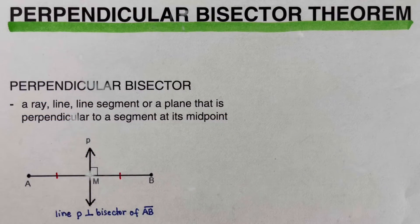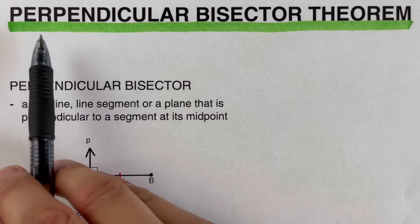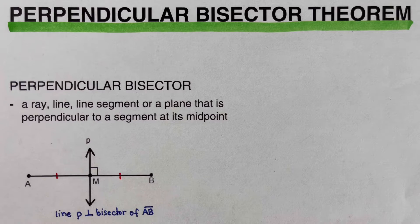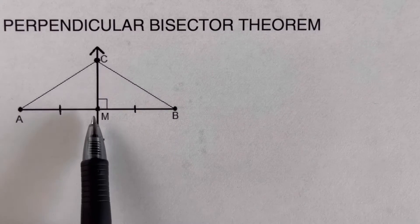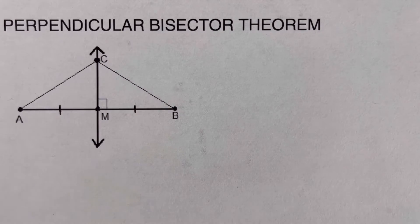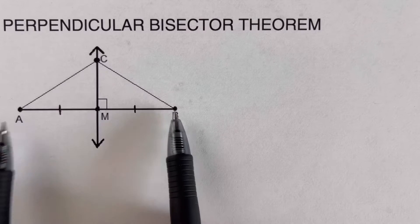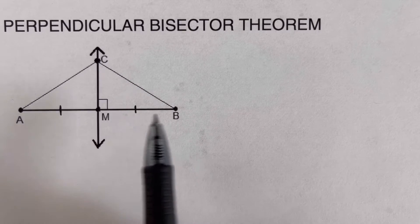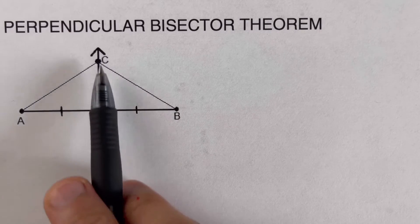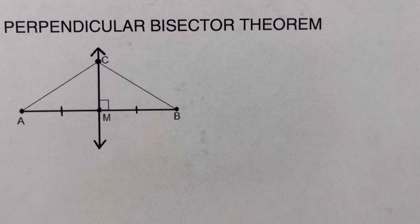Hello everyone. In this video we're going to focus on solving problems involving the perpendicular bisector theorem. Before we go over some examples, let's have a review. Looking at this picture, line CM is a perpendicular bisector of segment AB. Two conditions are met: it is perpendicular, forming a 90-degree angle, and AB is cut into two equal pieces.